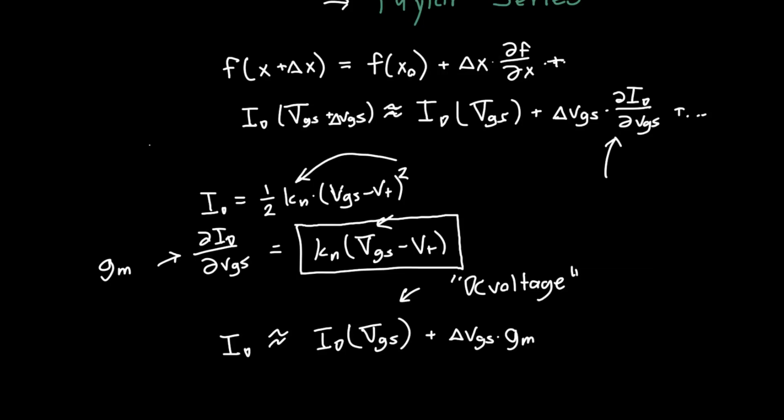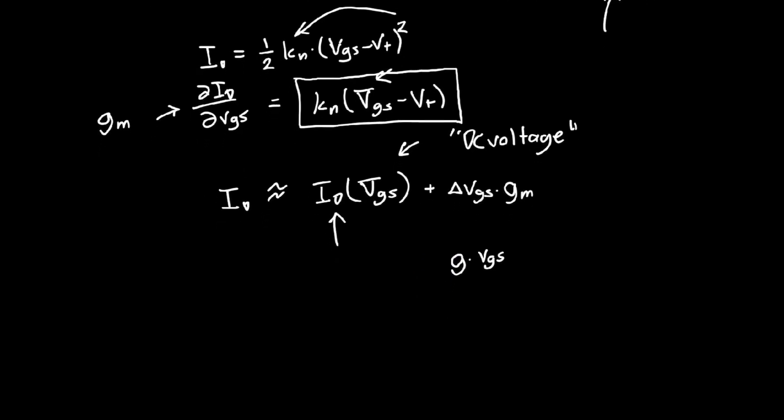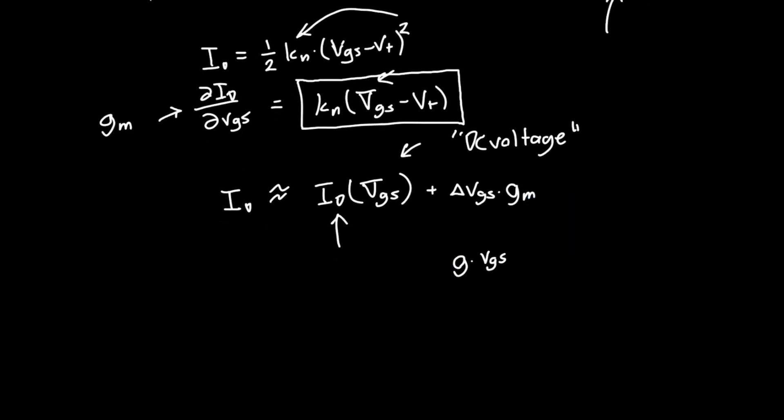And, okay, well, that's great, but we've got this annoying term hanging on over here. I thought we wanted just some proportionality constant G times VGS. And yeah, this is annoying. So what we generally do to get rid of this is we say, well, we're not actually interested in the DC current, or we're not interested in the total current, but we're only interested in the change in current, delta ID.